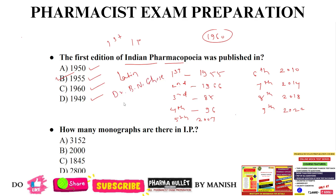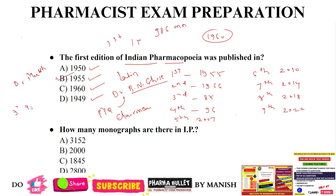This is a previous year question: who was the chairman of the first edition of Indian Pharmacopeia? Dr. B.N. Ghosh. And the first IP contains 986 monographs. Then who was the chairman of the second edition of Indian Pharmacopeia? Dr. Mukherjee. And the chairman of the third and fourth edition of IP was Dr. Nithyananda.